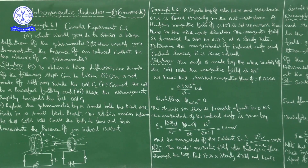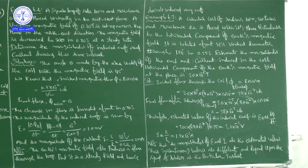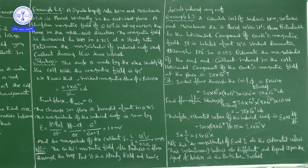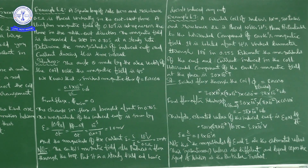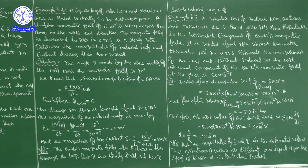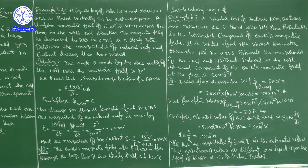In Example 6.3, using the same flux formula BA cos theta, we calculated initial and final flux, then applied Faraday's second law epsilon = N × dΦ/dt to get the induced EMF, and I = epsilon / R for the induced current. The important note: these are estimated values; their instantaneous values are different and depend upon the speed of rotation at the particular instant. Next class, we will continue with Example 6.4. Thank you.